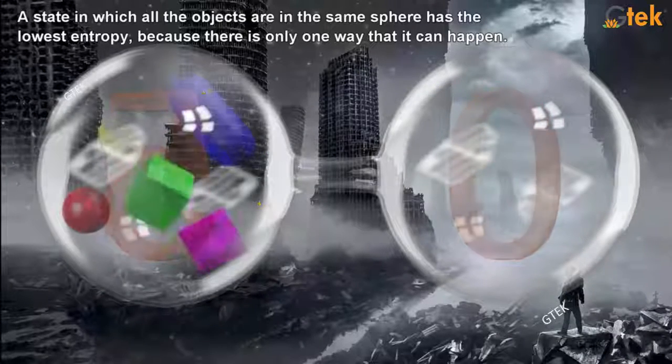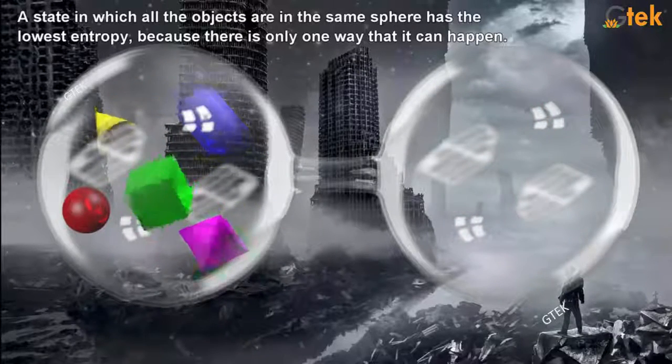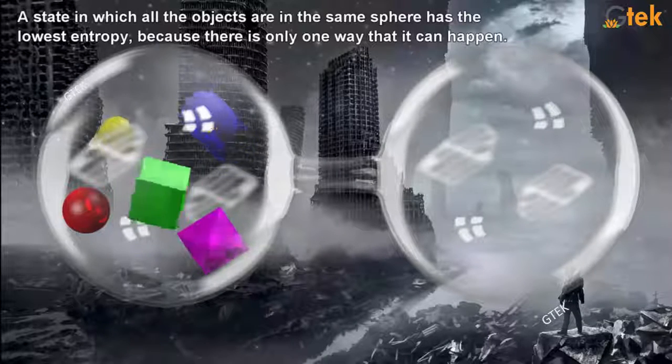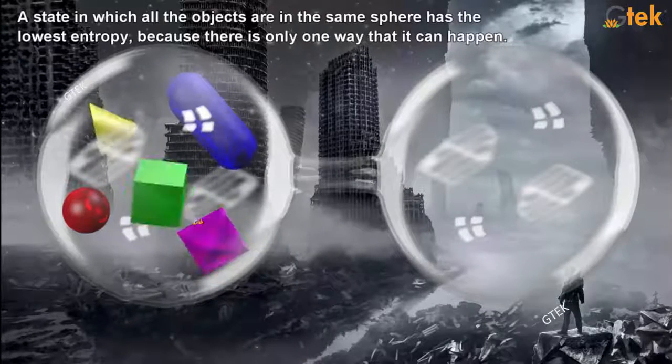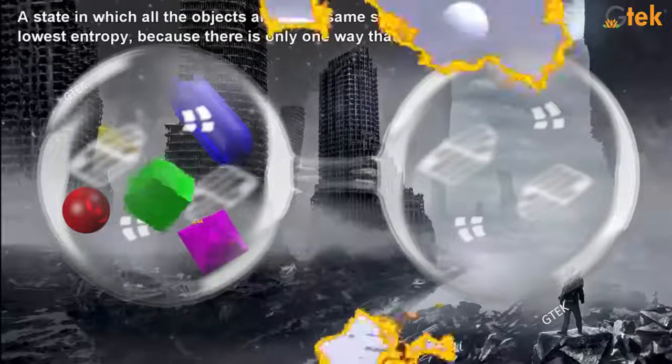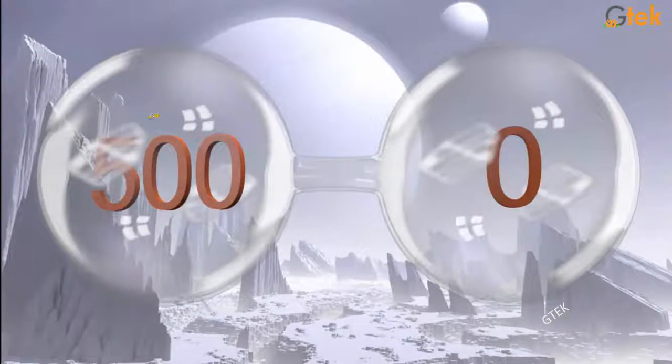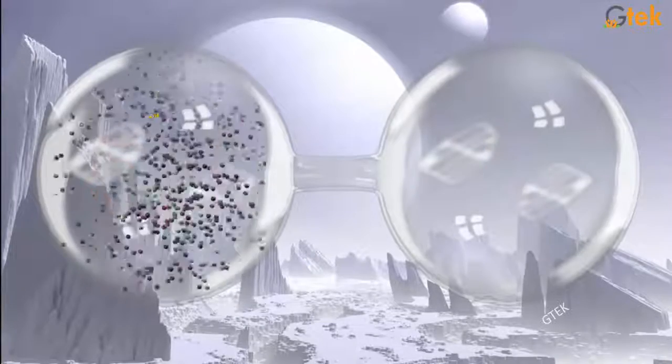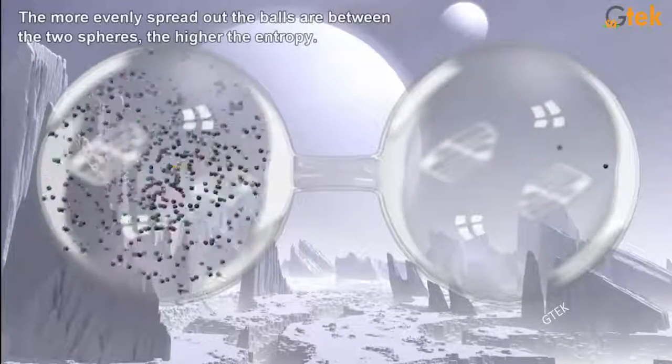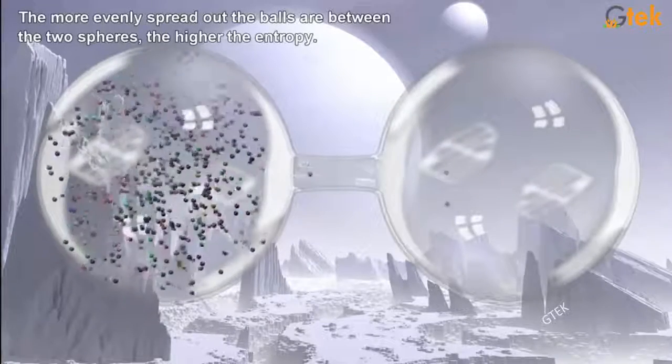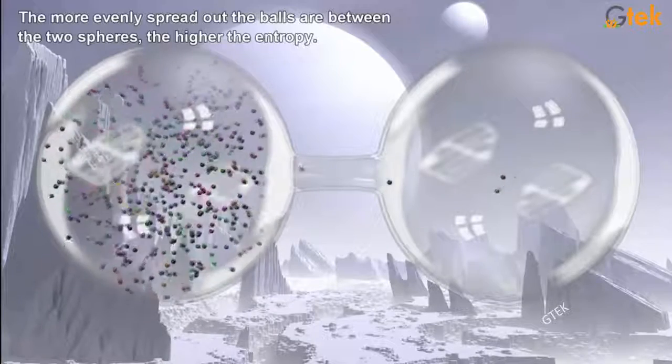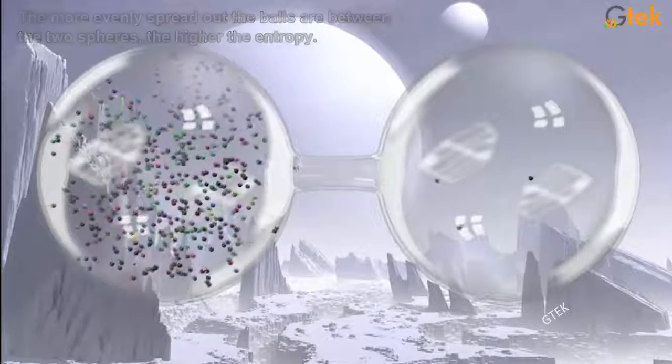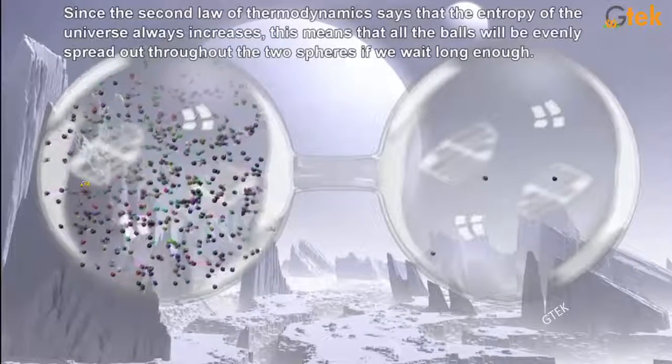A state in which all the objects are in the same sphere has the lowest entropy because there is only one way that it can happen. Considering this is really huge, I got 500 objects. The more evenly spread out the balls are between these two spheres, the higher the entropy.